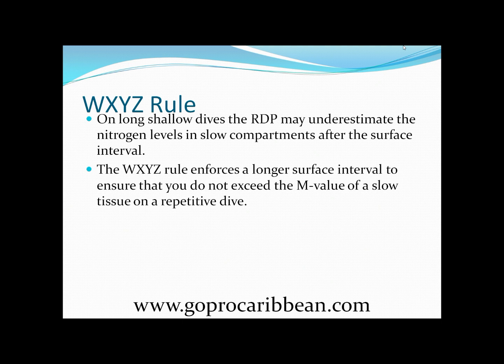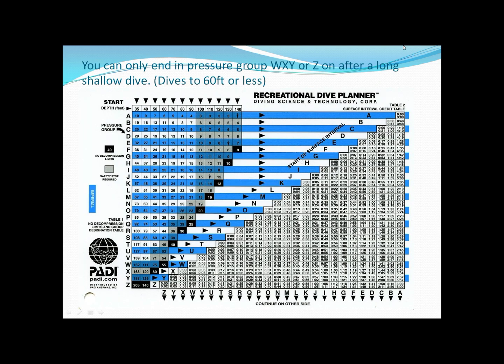The WXYZ rule is: if you end in pressure group W or X, you should do a minimum surface interval of 60 minutes; if you end in pressure group Y or Z, you should do a surface interval of at least three hours. Looking at the RDP, to get into pressure group W, X, Y, or Z you would have to have done a fairly long, fairly shallow dive. It would be in those situations that the 60-minute gas washout the RDP assumes may actually underestimate the amount of nitrogen left in your body after a reasonably short surface interval.